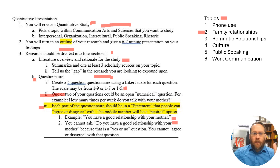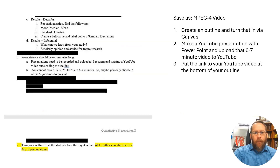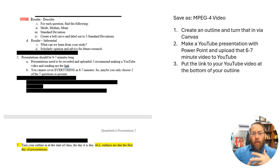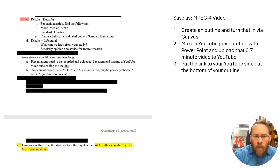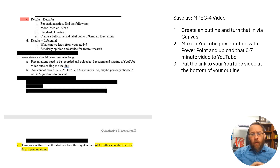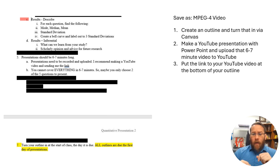Come up with five statements that can be agreed or disagreed with on a Likert scale. For the results section, for each question you need to find the mode, the median, and the mean. You'll send out questionnaires to 12 respondents. You can use people in the class through Canvas, set up an online survey, print them out and take them to coworkers, or have friends fill them out.